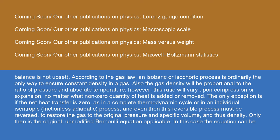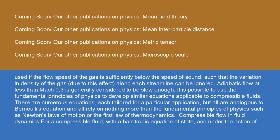The gas density will be proportional to the ratio of pressure and absolute temperature. However, this ratio will vary upon compression or expansion, no matter what non-zero quantity of heat is added or removed. The only exception is if the net heat transfer is zero, as in a complete thermodynamic cycle or in an individual isentropic, frictionless adiabatic process. And even then, this reversible process must be reversed to restore the gas to the original pressure and specific volume, and thus density. Only then is the original, unmodified Bernoulli equation applicable. In this case, the equation can be used if the flow speed of the gas is sufficiently below the speed of sound. Adiabatic flow at less than Mach 0.3 is generally considered to be slow enough.